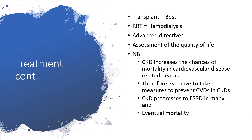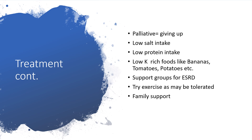Note that chronic kidney disease and end-stage renal disease increase the chances of mortality from cardiovascular disease; therefore, measures must be taken to prevent cardiovascular complications. In palliative treatment — for patients not opting for transplant — advise low salt intake, low protein intake, low potassium-rich foods such as bananas, tomatoes, and potatoes. Also recommend support groups, exercise as tolerated, and family meetings for support.